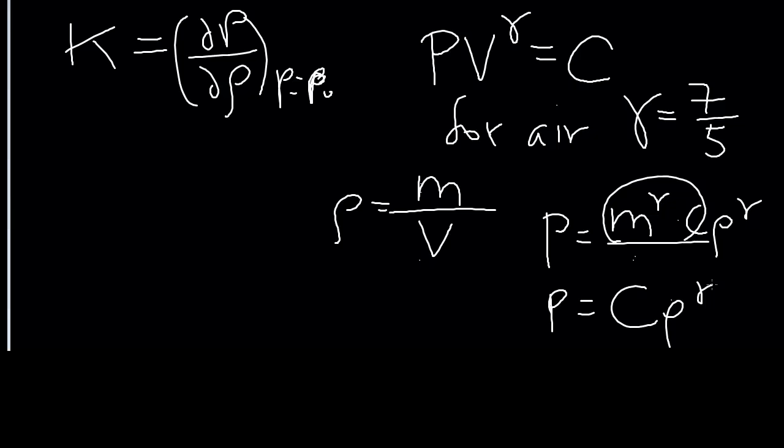So if we take the derivative, that's going to give us c rho^(gamma-1) times gamma.